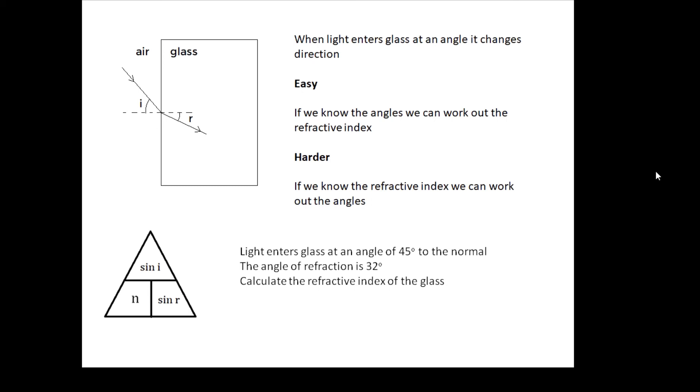First one: light enters glass at 45 degrees to the normal. The angle of refraction is 32 degrees. Calculate the refractive index of the glass. So n equals sin i over sin r.